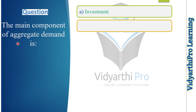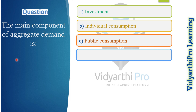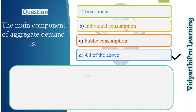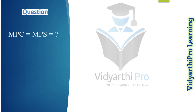Our next question: what is the main component of aggregate demand? In Hindi: 'Kul maang ka mukhya ghatak kya hai?' Options: investment, individual consumption, public consumption, or all of the above. The correct answer is option D, all of the above. Aggregate demand is the sum of four components: consumption, investment, government spending, and net exports.